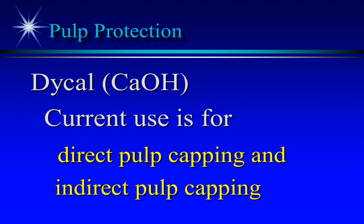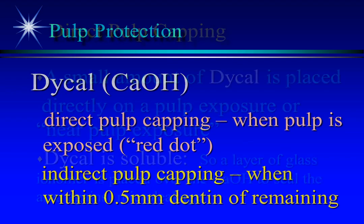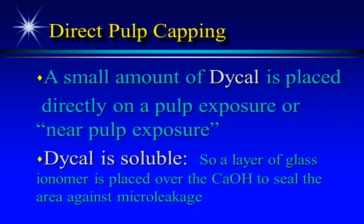When the pulp is exposed during a restorative procedure, a direct pulp cap is performed. An indirect pulp cap is performed when you know you are very close to the pulp but don't see a red dot — the dentin in the area may or may not be pink. Dical is applied to the exposure or near-exposure, then a glass ionomer is applied in a thin layer over the Dical.